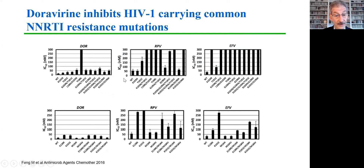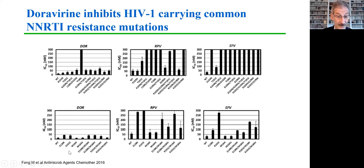However, if we look at the more usual NNRTI resistance mutations, doravirine continues to have good activity against viruses that carry the efavirenz resistance mutation at 103, the nevirapine resistance at 181, as well as combinations of those mutations — compared to rilpivirine and efavirenz. We can also see that doravirine is effective against viruses that carry the 138 mutation, which as we discussed, is responsible for resistance to rilpivirine.